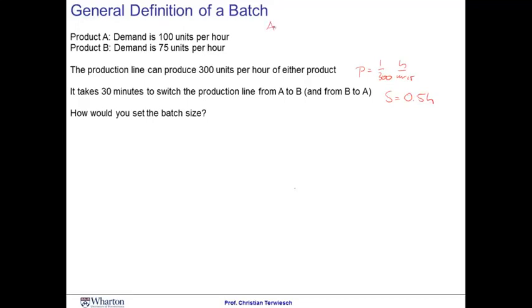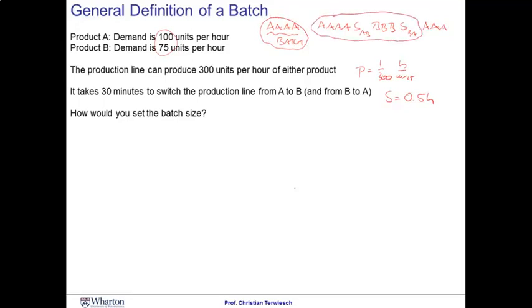Now, earlier on when we defined a batch, we were looking at the collection of product A — cheeseburgers — and we called that a batch. In a setting where you're producing multiple products, potentially with different demand rates, I found it useful to take a different approach to what we would think of as a batch. In this case, we're producing product A, then running a setup from A to B, producing a bunch of product Bs, changing over again from B to A, and then going back to producing A. Instead of the previous somewhat narrow view of a batch, I now want you to think of a batch as all of these units of A and B that we see before repeating the pattern of production.